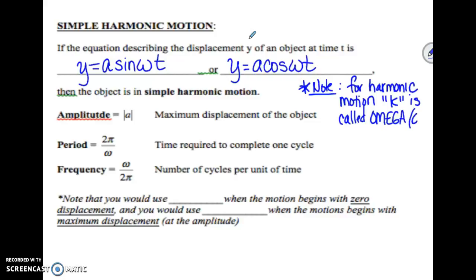Omega is k — it does the same thing, it changes our period. Our period for sine and cosine is always 2 pi divided by k, but now with these harmonic motion application problems our period is going to be 2 pi over omega. That is going to be our time required to complete one cycle.